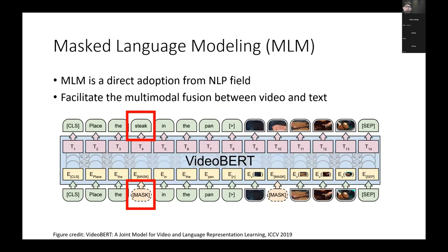Next is masked language modeling. Given the input text, we randomly mask some tokens, and the goal is to reconstruct the masked tokens by considering the contextual information. Through this MLM training, we can enforce the model to learn the interaction between text and video.